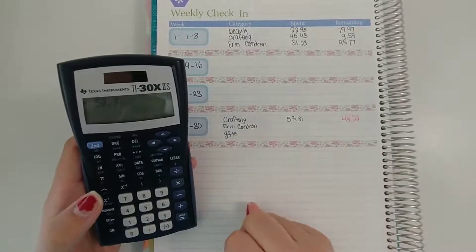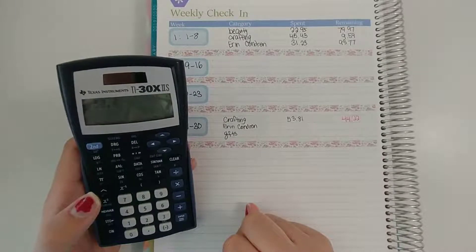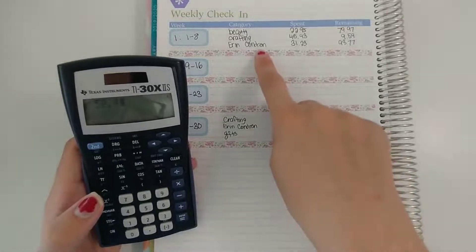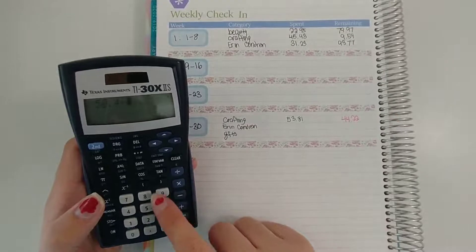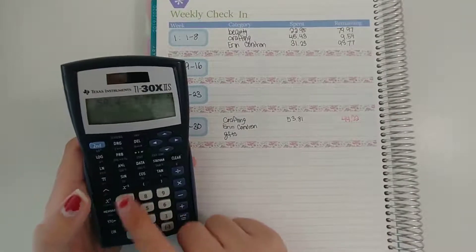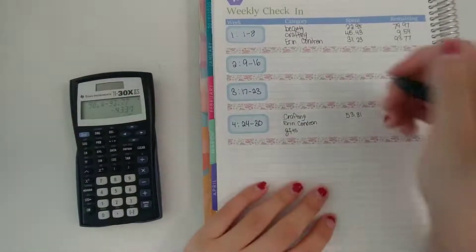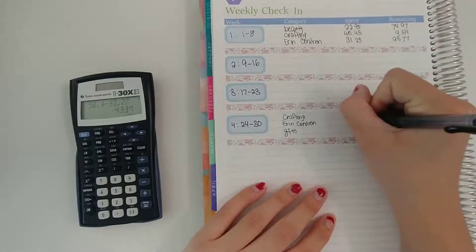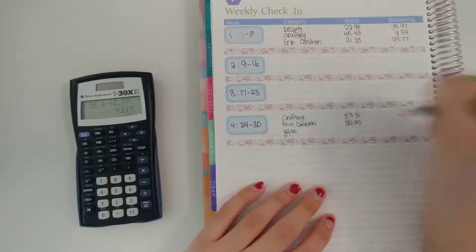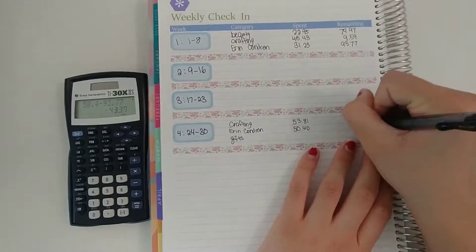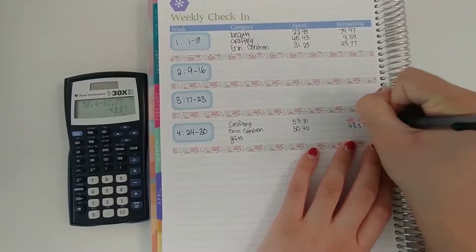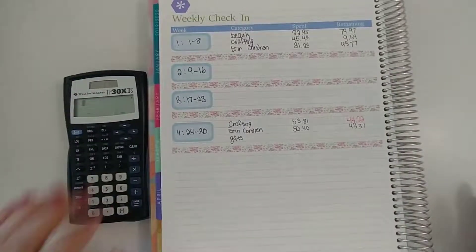So that was a total of $50.40. And for that category I have $93.70 remaining so I spent $50.40 and I have $43.37 remaining.